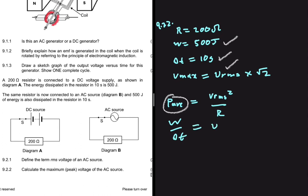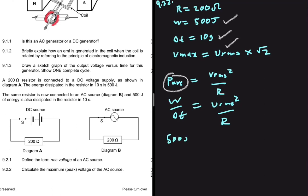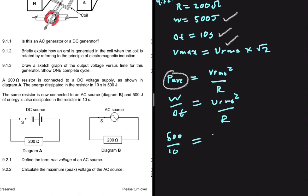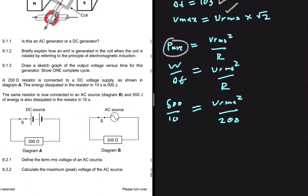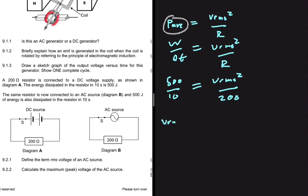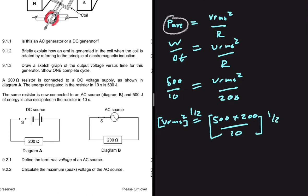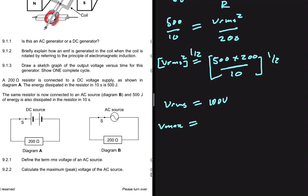So energy divided by time equals VRMS squared divided by resistance. That is 500 joules divided by 10 seconds equals VRMS squared divided by 200. Cross-multiplying and making VRMS the subject, VRMS squared equals 500 multiplied by 200 divided by 10. Taking the square root on both sides gives VRMS equals 100 volts. Therefore Vmax equals 100 multiplied by the square root of 2, which is 141.42 volts.